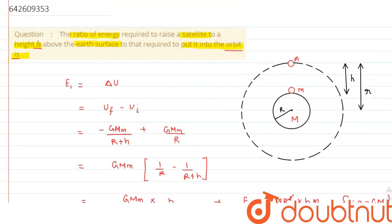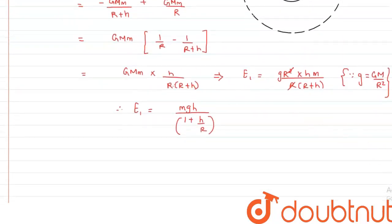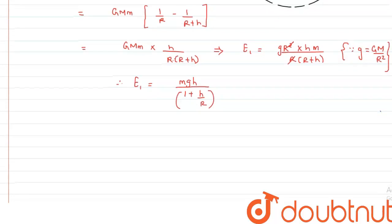For the second part, we need to find the energy to put the satellite into its orbit where it revolves. In orbit, the satellite is associated with kinetic energy as well, since it moves with orbital velocity (critical velocity). The total energy required equals the total mechanical energy of the satellite in orbit (potential plus kinetic) minus the potential energy at the surface.